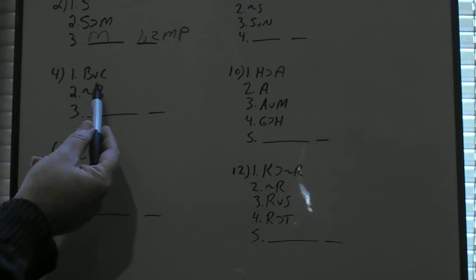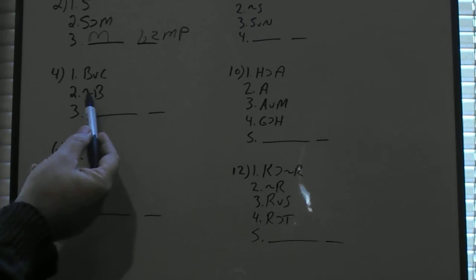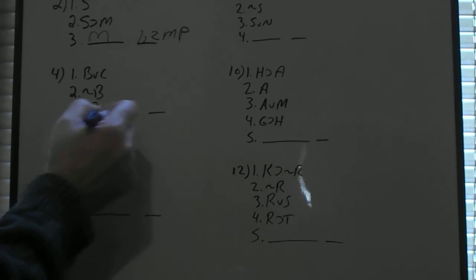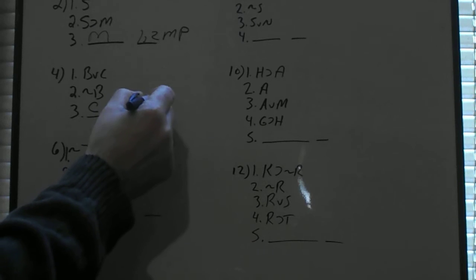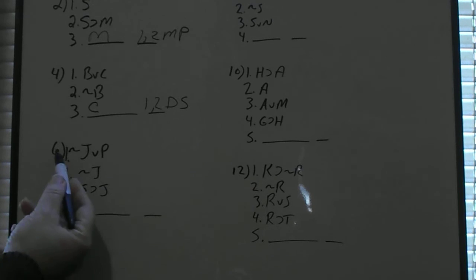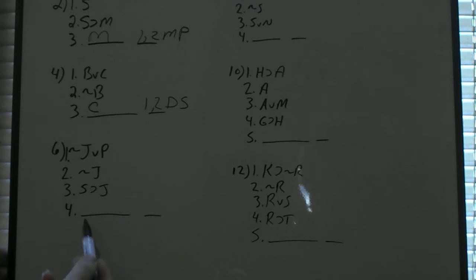For number 4, we have 'B or C' and 'not B.' With that wedge there, it's going to be a disjunctive syllogism: it's either B or C, if it's not B it has to be C — lines 1 and 2, disjunctive syllogism. Those are pretty straightforward.